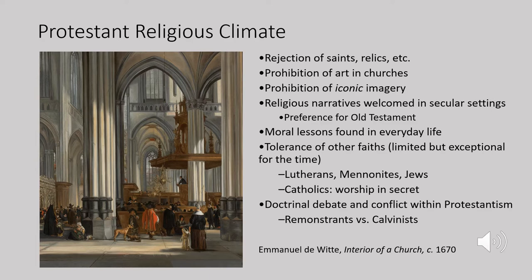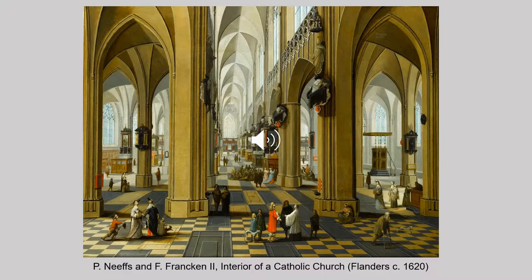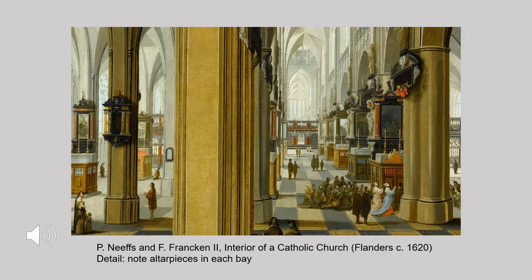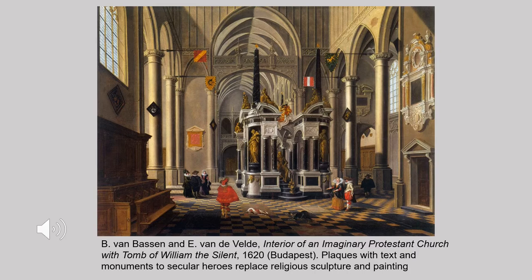The most important thing that happened as a result of the Protestant Reformation for the art market was that Protestants removed all of the altarpieces and sculptures and other beautiful works of art from churches. They believed the churches should be pure spaces where only the word — the Bible — took precedence. This reduced the market for religious imagery and inspired artists to turn to secular subject matter. Here you see the interior of a Catholic church in the southern Netherlands with altarpieces lining each bay, compared with a Protestant church interior where monuments to saints have been replaced by the secular tomb of William the Silent.